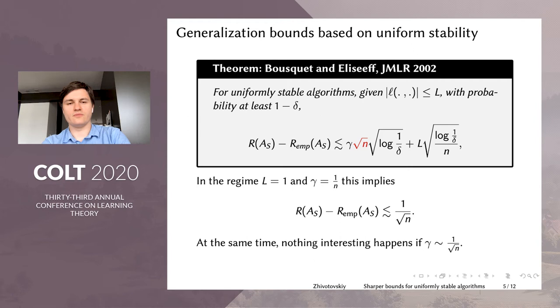Let us recall some well-known results on uniform stability. So the following bound is classical and was first presented by Bousquet and Elisseeff. And it's based on the bounded difference inequality. So for uniformly stable algorithms, if the loss is bounded by capital L, then with probability at least 1 - δ, the generalization error scales as a sum of these two terms. The first term corresponds to the stability, so it depends on γ. And the second term represents this sampling error. So it doesn't depend on γ at all.